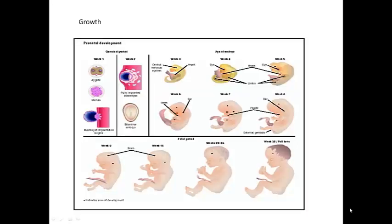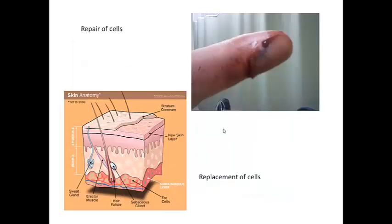For growth, we all started out as one tiny single cell, and through the process of mitosis — those cells dividing and dividing and dividing — after nine months we were a little person. When we cut ourselves, we need to repair that break in our skin by growing new cells to cover the gap. And in areas like our skin, cells are constantly rubbed off and lost, and new cells are produced by cells underneath the skin layer dividing.